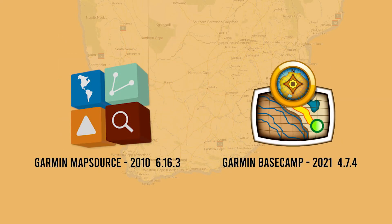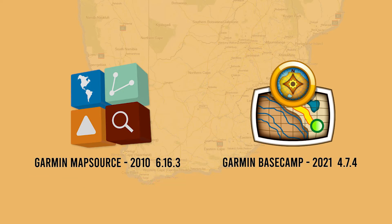Map Source is the oldest software program by Garmin and was last available in October 2010. The last version was 6.16.3. However, if you try to install this version, it will not install unless you have an older version of Map Source already installed. Map Source was only available for Windows and not Mac operating systems, so this video is for users who already have Map Source installed on their Windows computers.